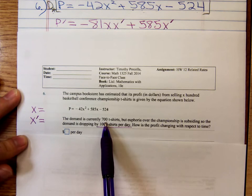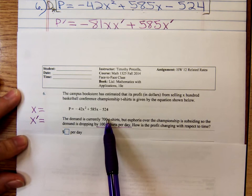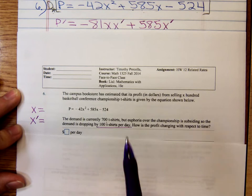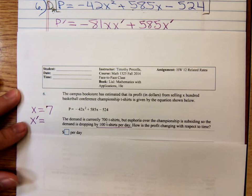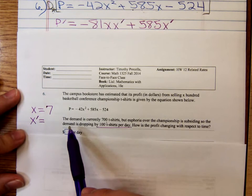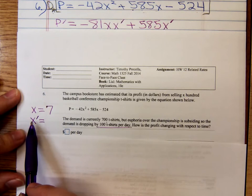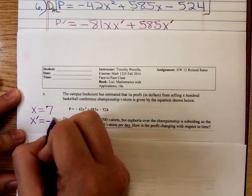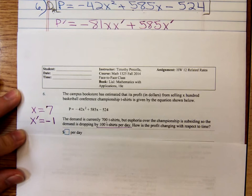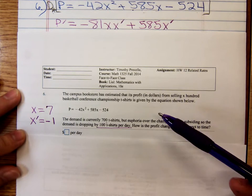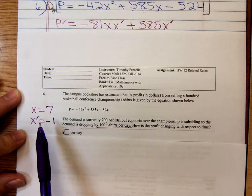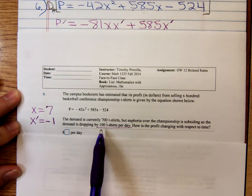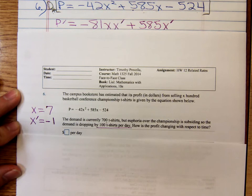So, the demand is currently 700 t-shirts. So, which letter is just representing the quantity? That would be x. That's not a rate. And instead of setting x equal to 700, we're just going to set it equal to 7. Now, x prime, the demand is dropping. That's the demand. That's the rate of change of the demand. It's decreasing. So, that's a negative. By 100 t-shirts, so that's what? x prime equals a negative 1. So, take a moment and think about that. The demand is 700. x is representing the demand. The number of t-shirts sold. So, x is 7. The rate of change of demand, negative 100, negative 1, since x is in terms of hundreds.